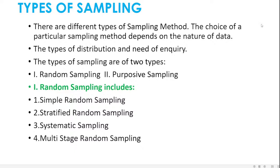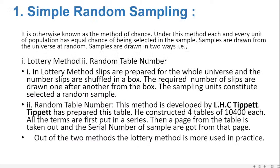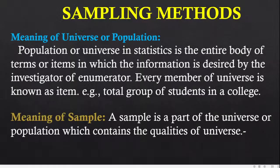Sampling method of data collection selects some representative units; selected units are called the sample. For example, a doctor tests the quality of blood using a sample rather than all blood. Every member of the universe is known as an item. The population or universe in statistics refers to the entire body of terms or items in which information is desired by the investigator. Total group of students in a college is an example of a universe.